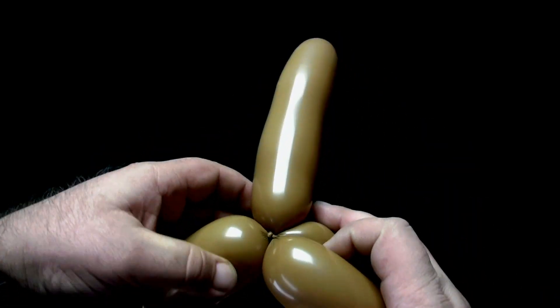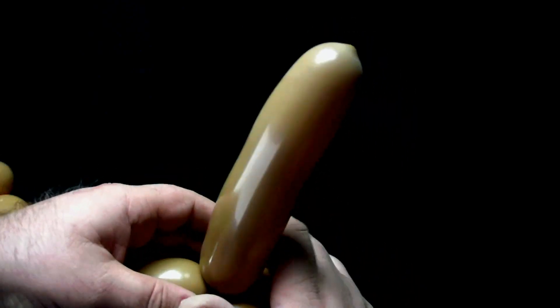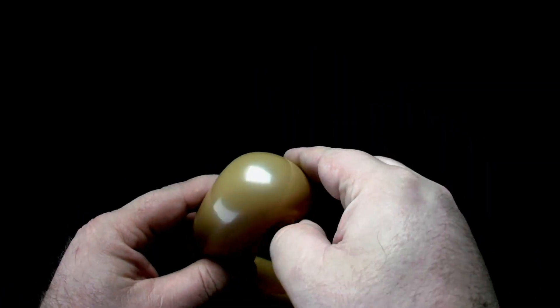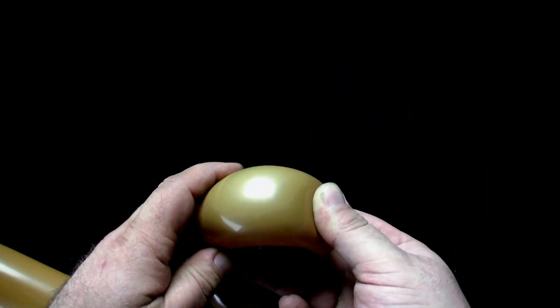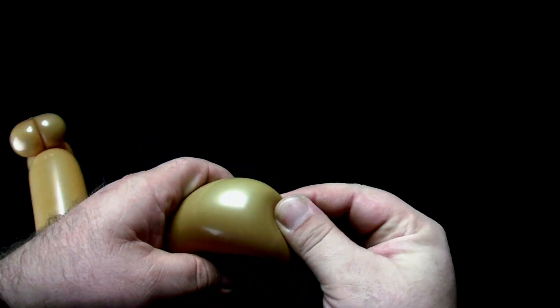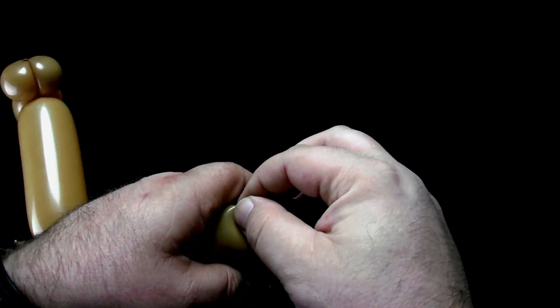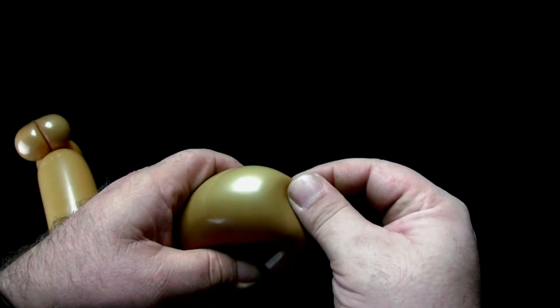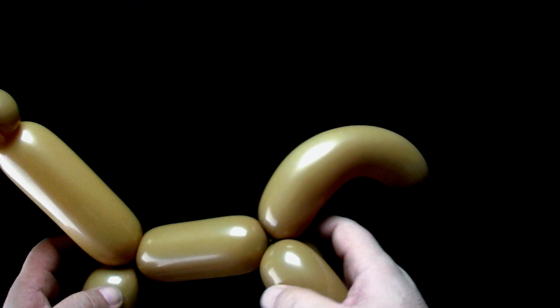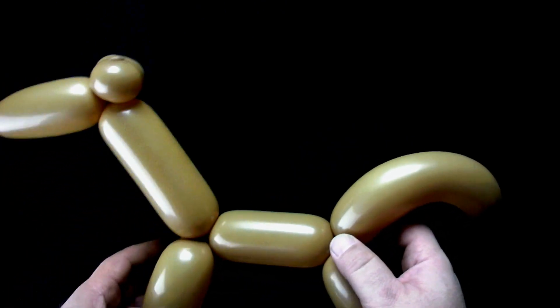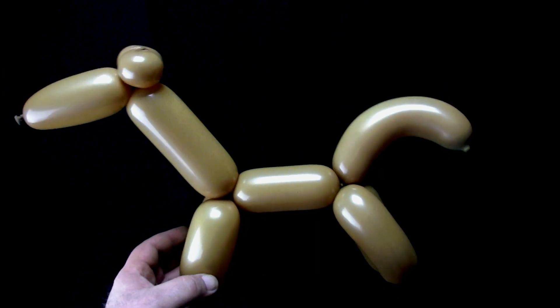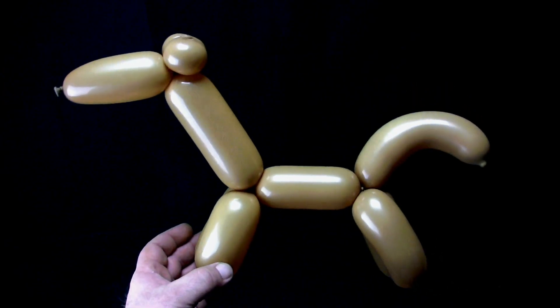The remainder is the tail. Bend the tail and hold for a few seconds to give the tail a curve. And that is how you make a balloon horse.